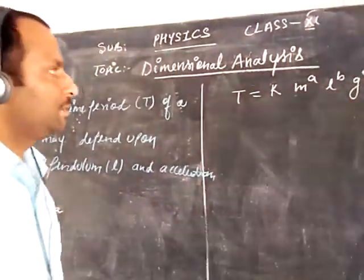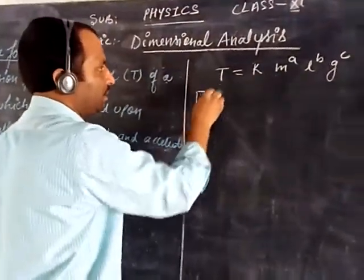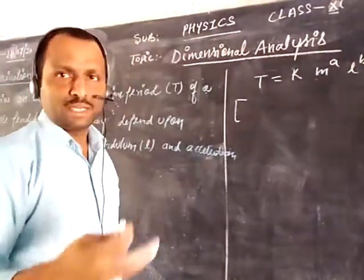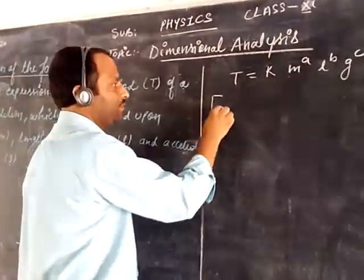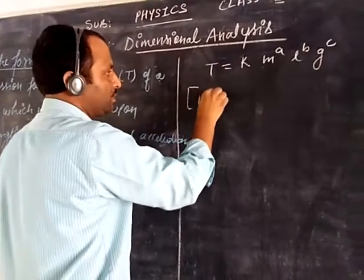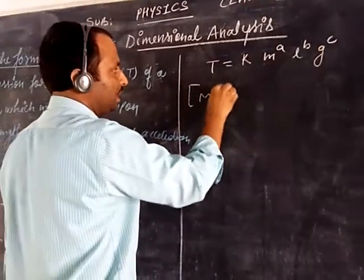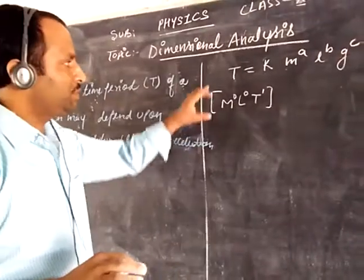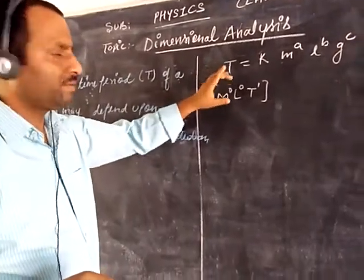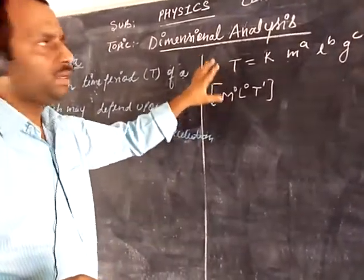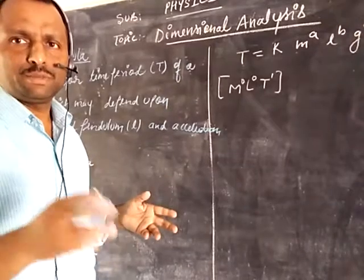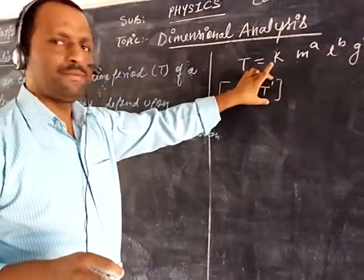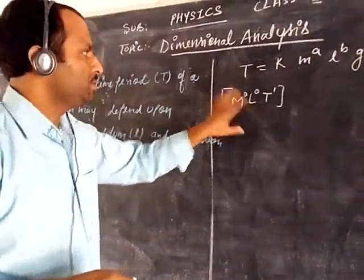We will put in the dimensions. The dimension of time period — time period means time. So the dimension will be M to the power 0, L to the power 0, and only the dimension of time will be there. The dimension of mass will be 0, the dimension of length will be 0. Time means the time taken to complete one oscillation, so only the time factor dimensions will be there.